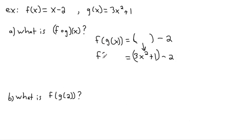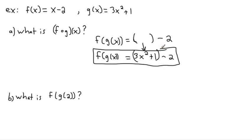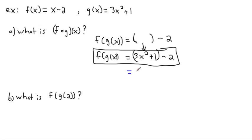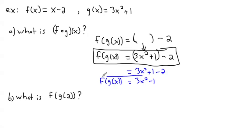However, maybe we want to actually simplify the whole thing. Your teacher might ask you to expand and simplify. In that case, it's not so bad: we have 3x squared, and in the bracket we have plus 1 minus 2. We can't simplify 3x squared further, but we can simplify plus 1 minus 2, which equals negative 1. So f of g of x simplifies to 3x squared minus 1. It all depends on how far you want to go.